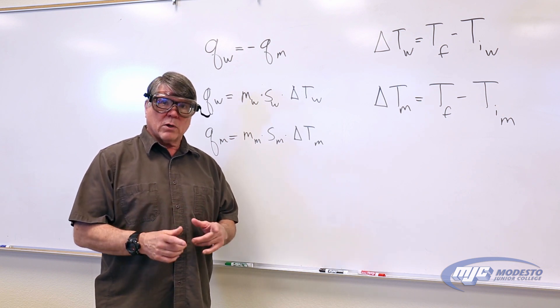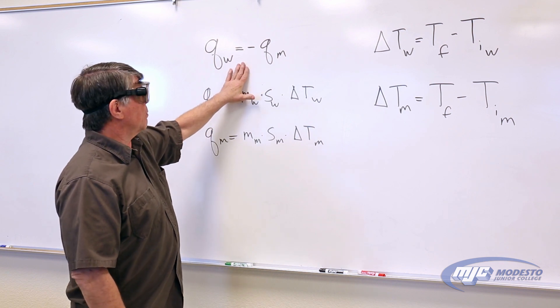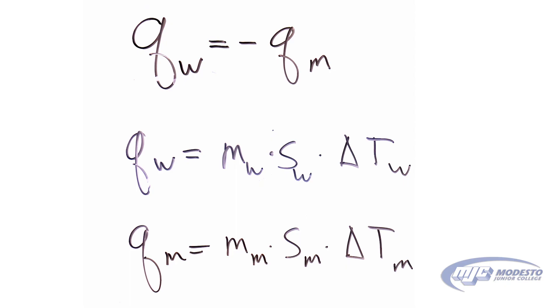To do that, we're going to use this equation right here. Really simple equation, guys. Remember, Q stands for how much energy goes into or out of an object. So what this equation says is that the amount of energy that goes into the water is equal to the amount of energy that comes out of the metal. That negative means it comes out of the metal.